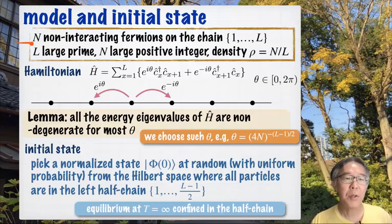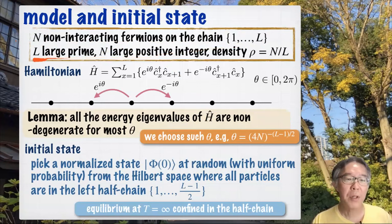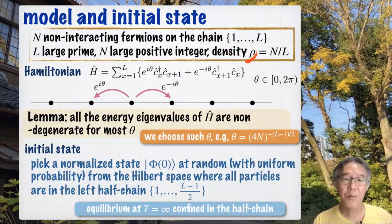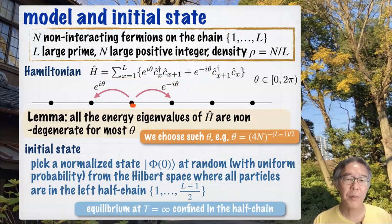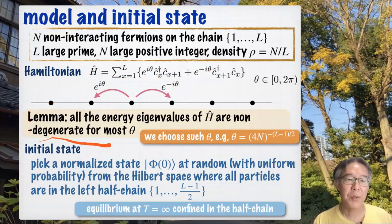This is our model. We consider a system of n non-interacting fermions on the chain — a one-dimensional lattice — with length L. For a technical reason, I assume that L is a large prime number, and n is the particle number. This is a large positive integer, and ρ is the density. We consider the region where ρ is rather small — the low-density region. This is a very standard Hamiltonian for free fermions: particles can hop from a site to its neighbors. The only non-standard feature is that we have a phase factor here, needed for the purpose of avoiding degeneracy.